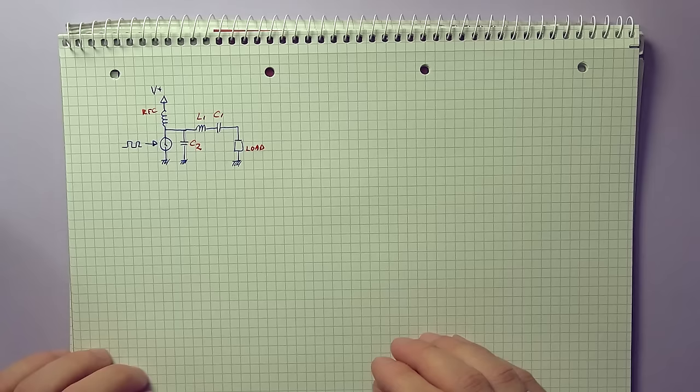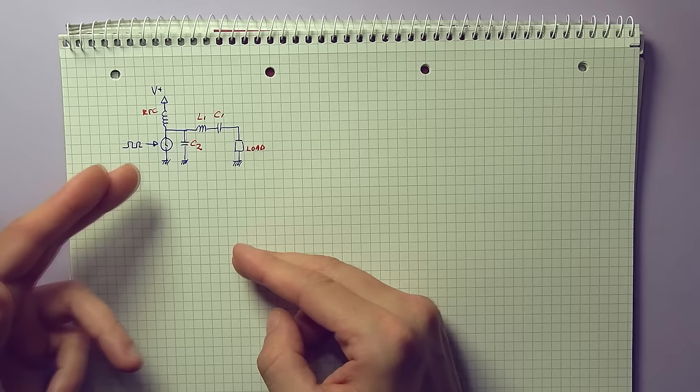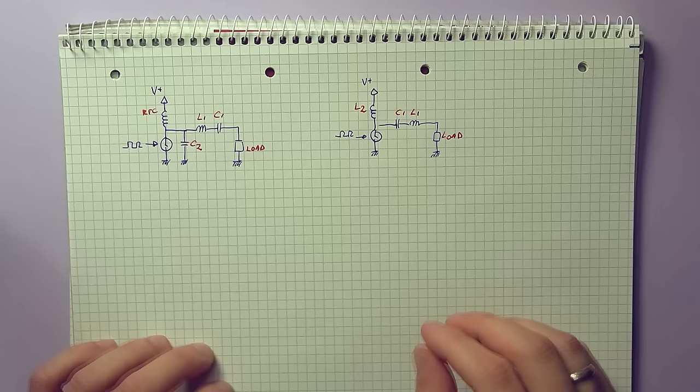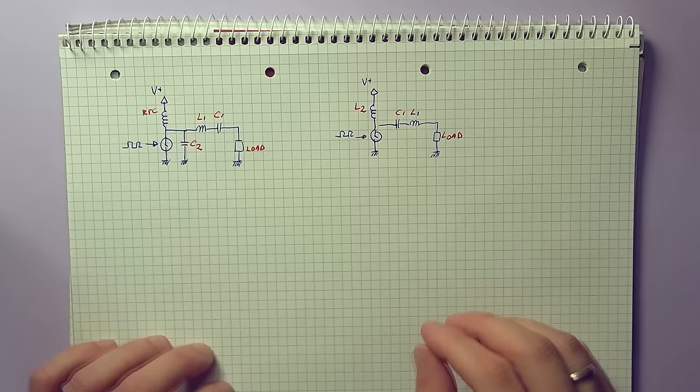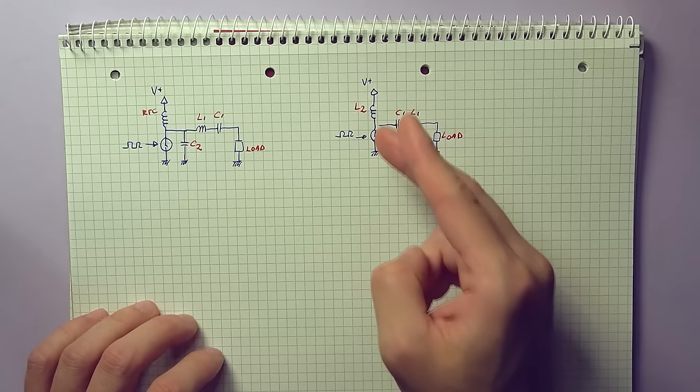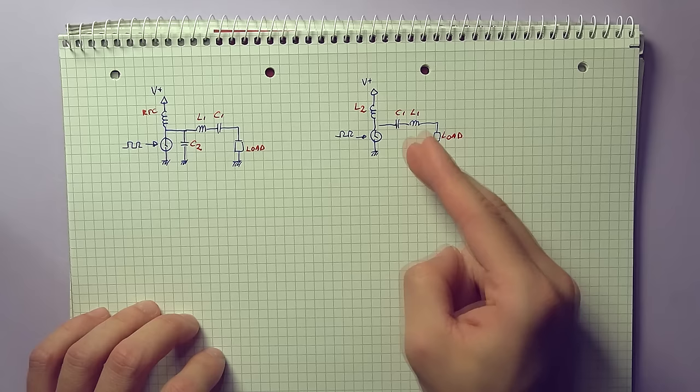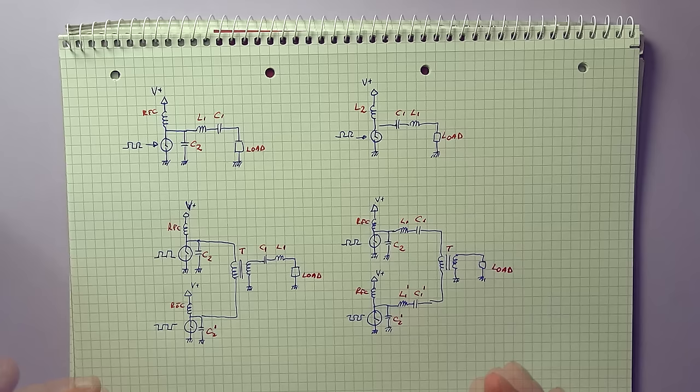Now the Class E amplifier can be built in multiple ways. The version you will most commonly come across uses a single switching transistor, with a resonant network using a parallel capacitor, and a radio frequency choke through which the circuit is supplied. Now you can also use a parallel inductor, so rather than using a large radio frequency choke, use that inductor as part of the resonant network, but this only works if the built-in capacitance of the switch, so its parallel capacitance, is very small. So that's why this version is not all that common.